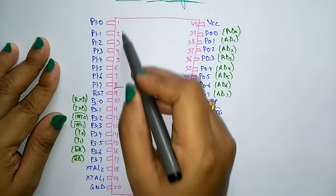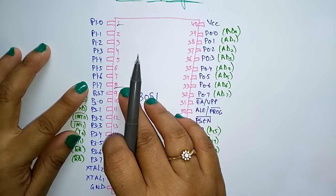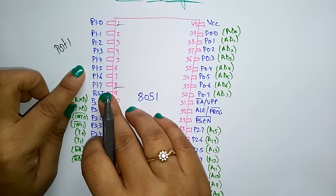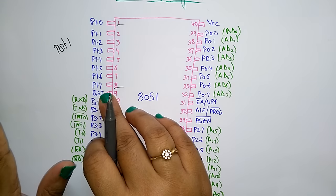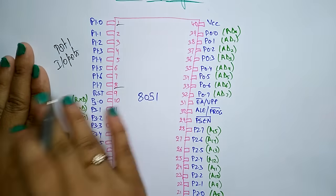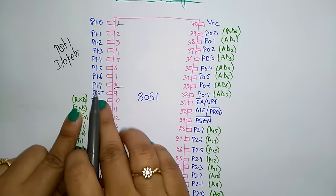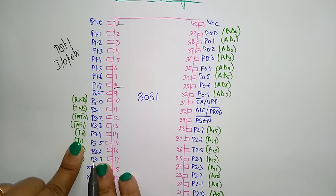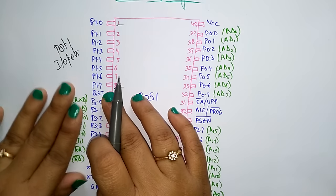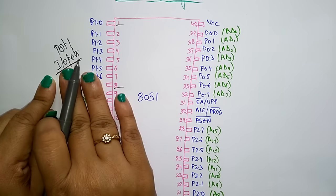Take pins 1 to 8 — these are port P1.0 to P1.7, so this is an 8-bit port. These pins are known as port 1. This port does not serve any other function. It is an internally pulled-up bi-directional I/O port — it acts only as input and output port. It cannot perform any other function.